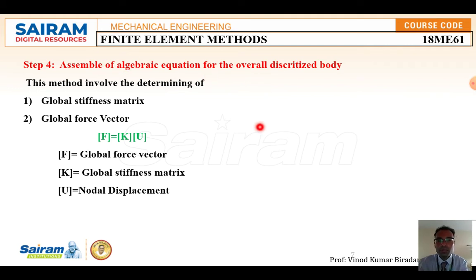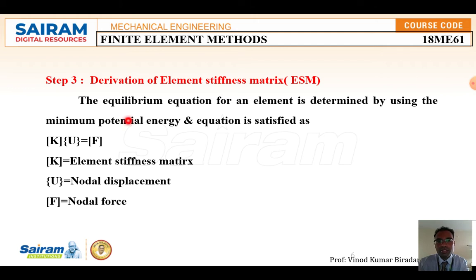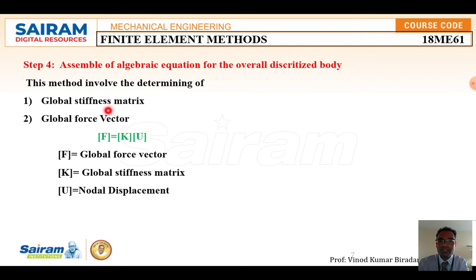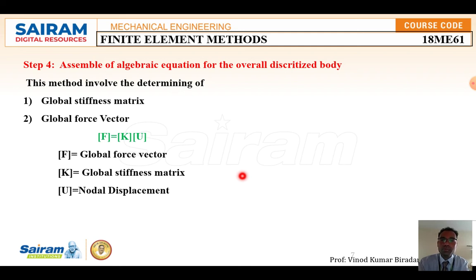The fourth step is to assemble the algebraic equations for the overall discretized body. You combine all element stiffness matrices to get the global stiffness matrix. This involves determining the global stiffness matrix K and global force vector F using the same formula F = K·u, where K is the global stiffness matrix and u is the nodal displacement.